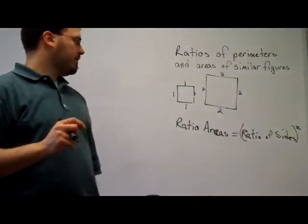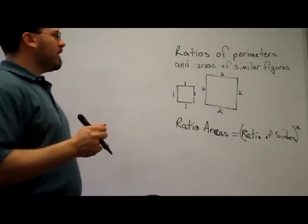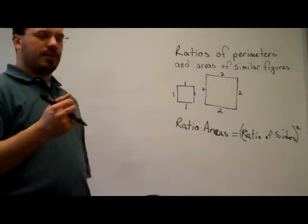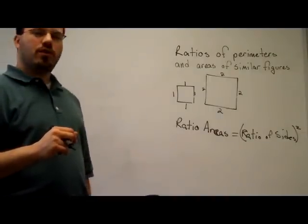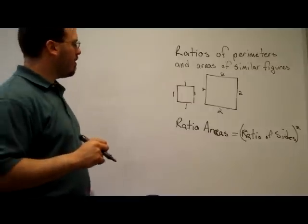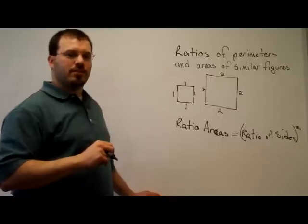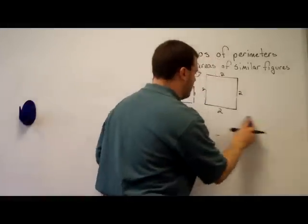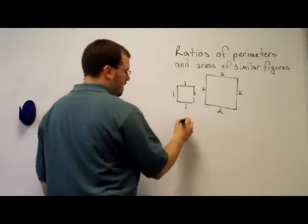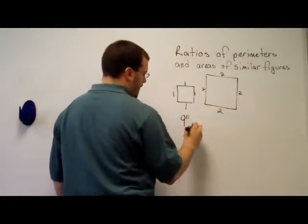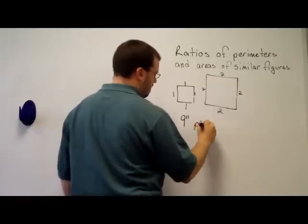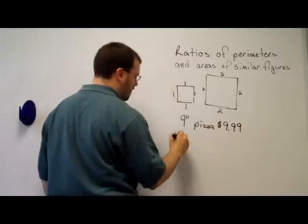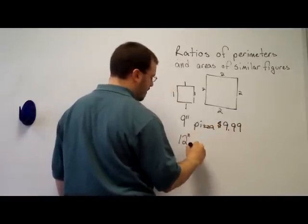Now, this would be something that you would use if there was a problem like: Find the fair price of a pizza with a diameter of 12 inches if the cost of a pizza with a diameter of 9 inches is $9.99. So we could look at that. So if we have a 9 inch diameter pizza for $9.99, and we want to know the cost of a fair price for a 12 inch pizza.